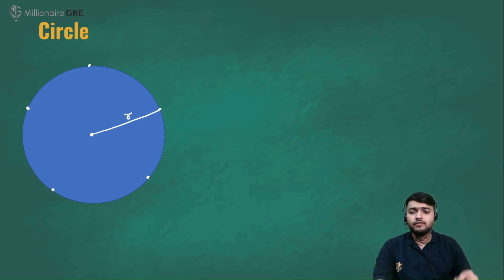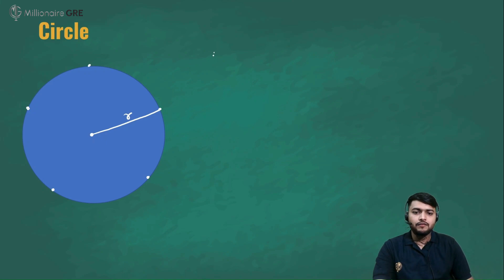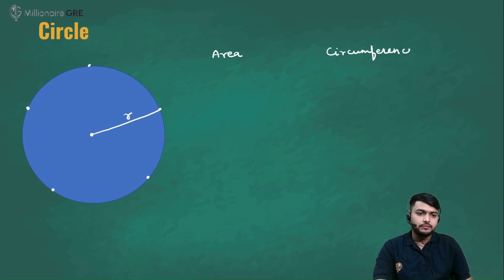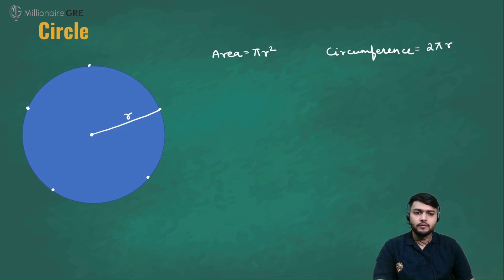There are a few fundamental formulas we have to know for circles. One is to find the area of a circle, and another is to find the circumference. Area of a circle is π r², and circumference is 2πr.